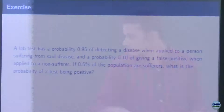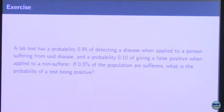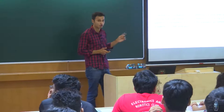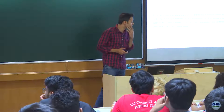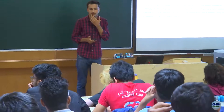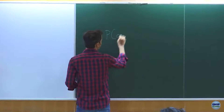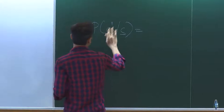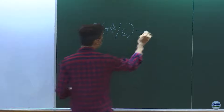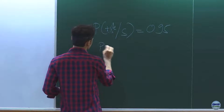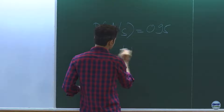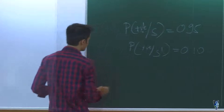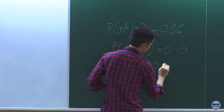We will look into an example of this. A lab test has probability of 0.95 of detecting a disease when applied to a person suffering from the disease, and a probability of 0.10 of giving a false positive when applied to a non-sufferer. If 0.5% of the population are sufferers, what is the probability of the test being positive? Probability of positive given sufferer is 0.95.